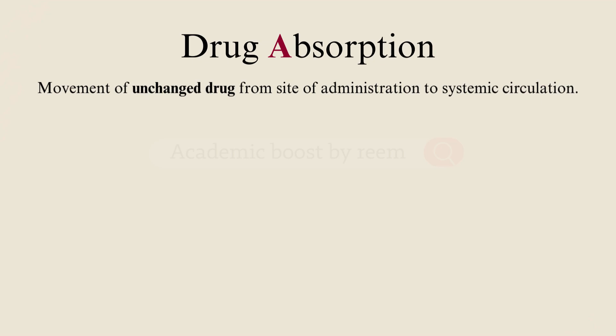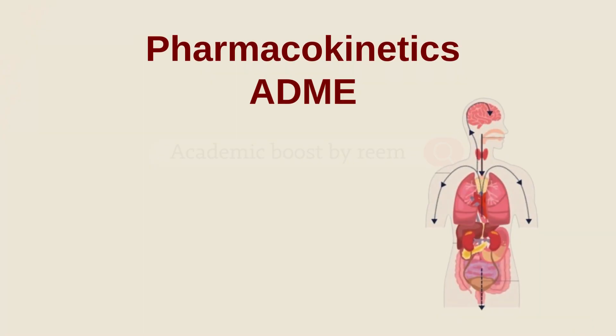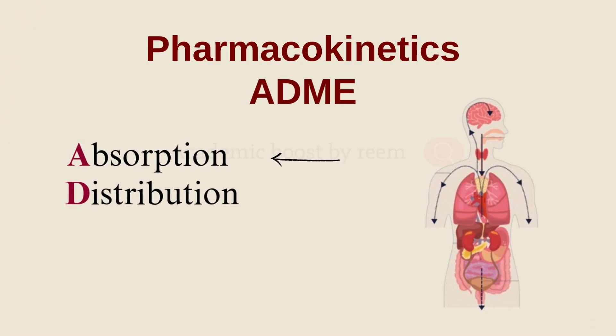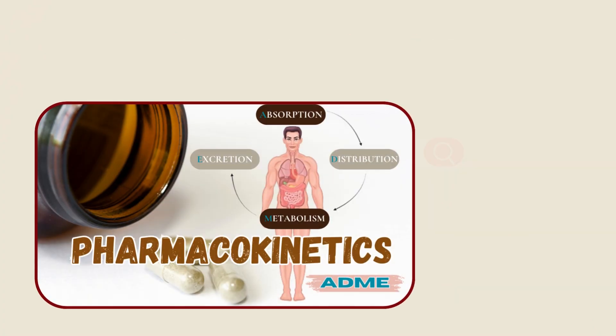Drug absorption is the movement of unchanged drug from the site of administration to systemic circulation. It's an important part of pharmacokinetics — the ADME concept — in which A stands for absorption, D for distribution, M for metabolism, and E for excretion. Check out our pharmacokinetics video for more details.